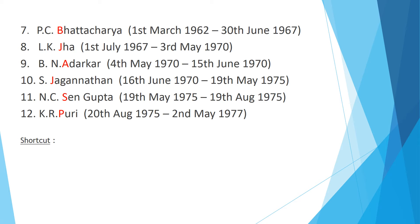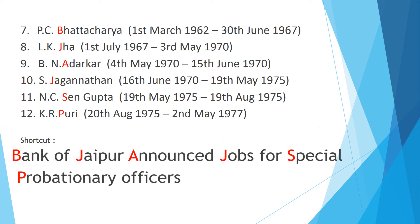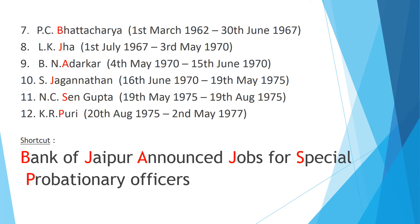K.R. Puri was appointed as the 12th RBI governor. The shortcut trick to remember these six RBI governors, from 7th to 12th, is: 'Bank of Jaipur announced jobs for special probationary offices.' Just concentrate on the letters highlighted in red color — B for Bhattacharya, J for L.K. Jha, A for Adharkar, J for Jagannathan, S for Sen Gupta, and P in probationary offices for K.R. Puri.